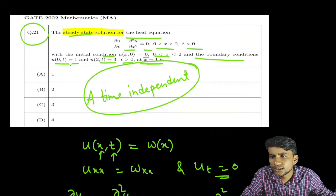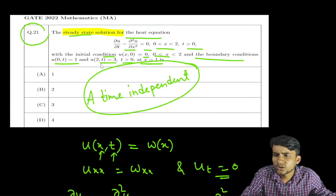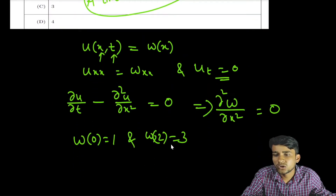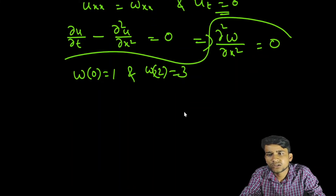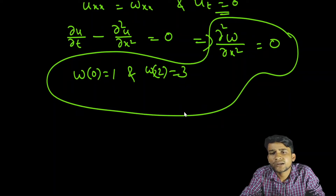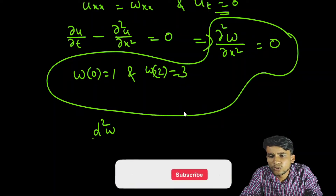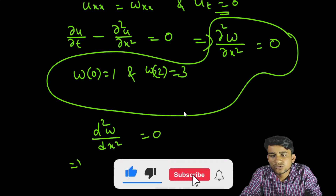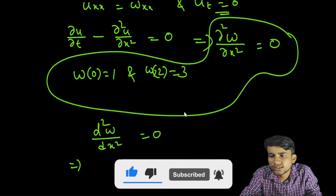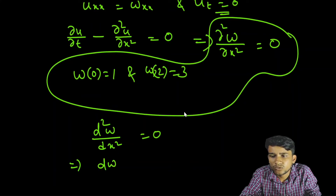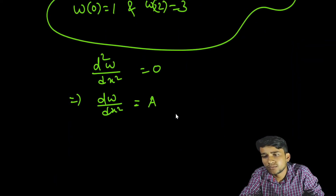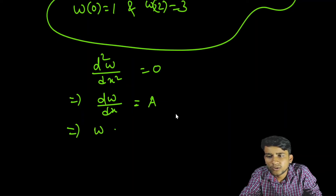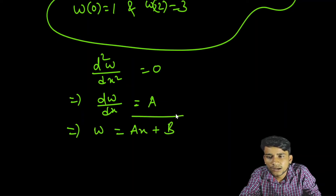Since u(0,t) = 1 and u(2,t) = 3, and w is time-independent, we have w(0) = 1 and w(2) = 3. Now we solve the ODE d²w/dx² = 0. Integrating once gives dw/dx = a (a constant), and integrating again gives w = ax + b.